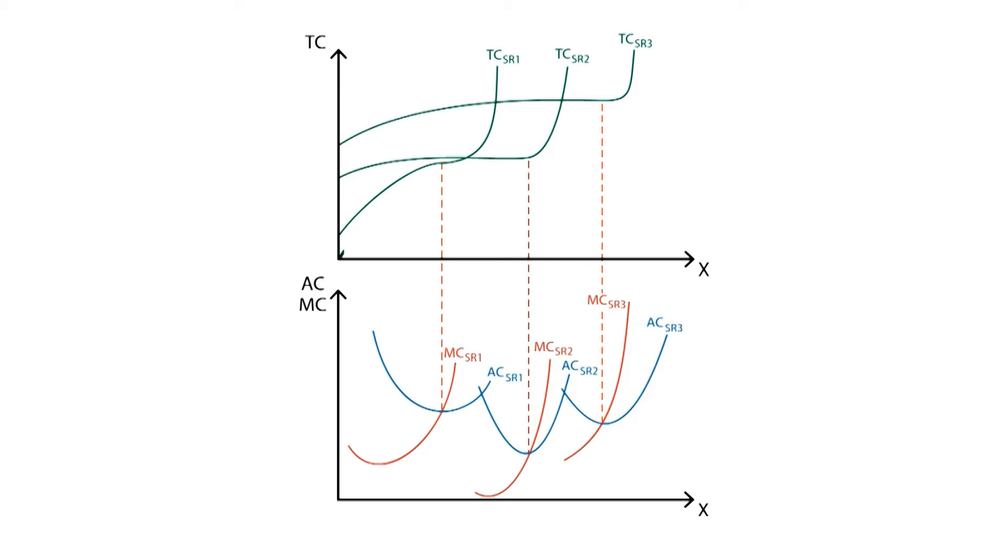We can now draw the long-run total cost curve that will include all of these short-run total cost curves. Again, we use the slope of the total cost curve to draw the long-run average cost curve. This curve will have the shape of a large U, being tangent to all short-run average cost curves.